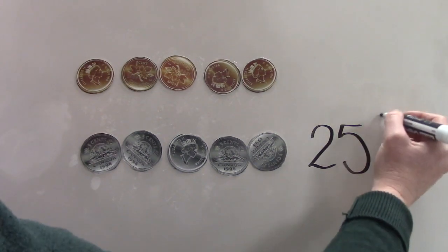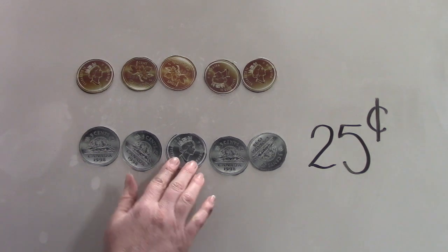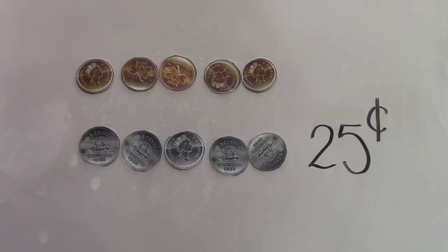How do we know that a coin is a nickel? Well, on our coins, on one of the sides, there's a beaver. And it says five cents right on the coin.